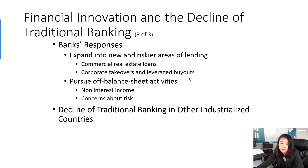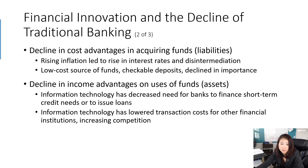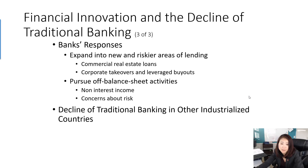In response to decreasing loan demand, declining cost advantages, and declining income advantages, banks expanded into new and riskier lending areas like junk bonds — allowing risky companies to issue bonds offering higher interest rates, meaning banks take on riskier assets. Banks also pursued off-balance-sheet activities such as sweep accounts and money market mutual funds. In summary, traditional banking is declining, but the banking system's answer is financial innovation.